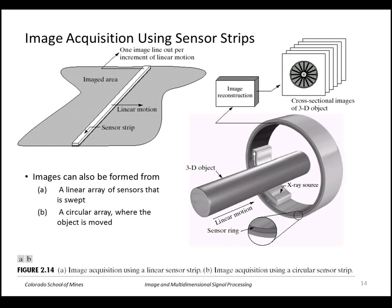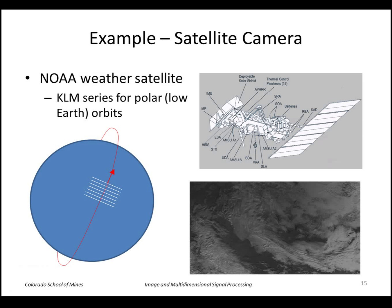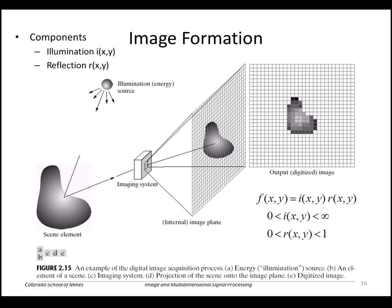Looking at other ways to form images: we can place CCD elements in a linear, one-dimensional array instead of a two-dimensional array, then form a two-dimensional image using transverse motion of that array. A flatbed scanner is a common example of this. Another type is an X-ray machine. A satellite is another example — the NOAA weather satellite uses a one-dimensional array swept by the satellite's orbital motion to form images of clouds.